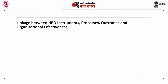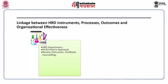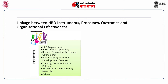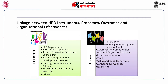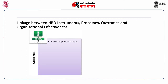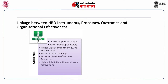The linkages between HRD instruments, processes, outcomes and organisational effectiveness are as follows. Instruments include: HRD department, performance appraisal, review, discussion, feedback, counselling, role analysis, potential development exercises, training, communication policies, job rotation, enrichment, rewards, etc. Processes include: role clarity, planning of development by every employee, awareness of competencies required for job performance, proactive orientation, trust, collaboration and teamwork, authenticity, openness, risk taking, value generation, and clarification of norms and standards. Outcomes include: more competent people, better developed roles, higher work commitment and job involvement, more problem solving, better utilisation of human resources, higher job satisfaction, better organisational health and teamwork, etc.